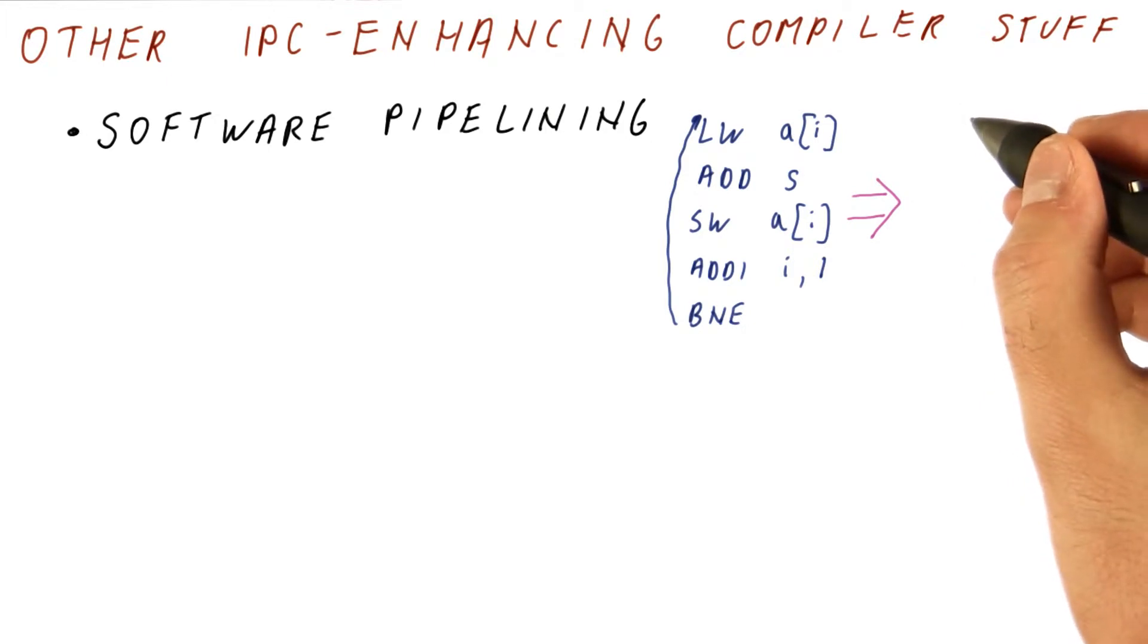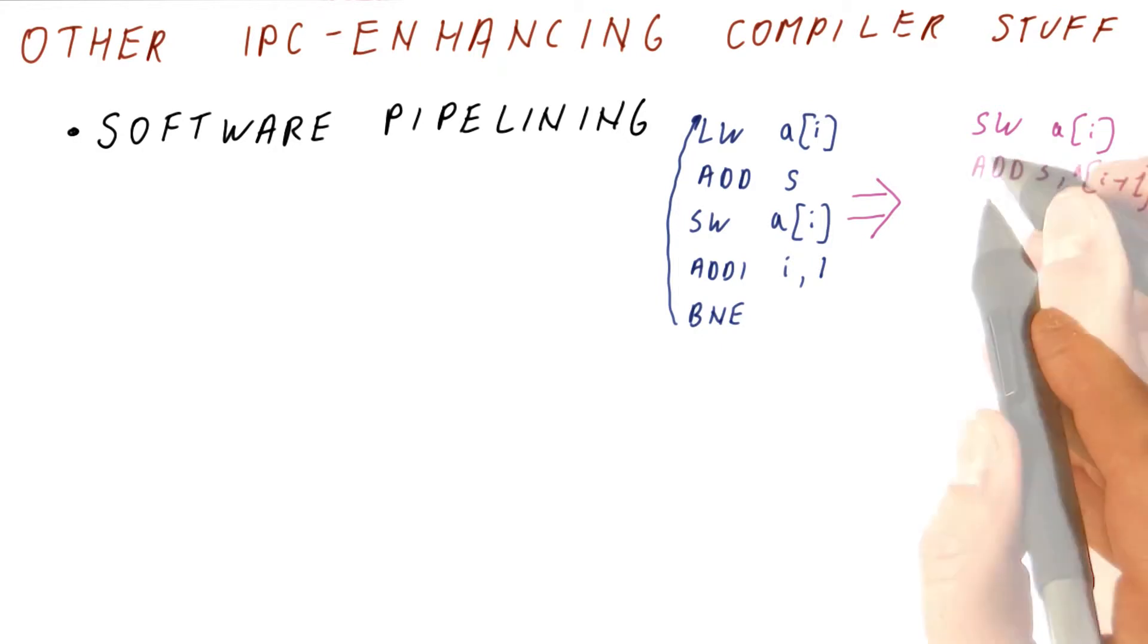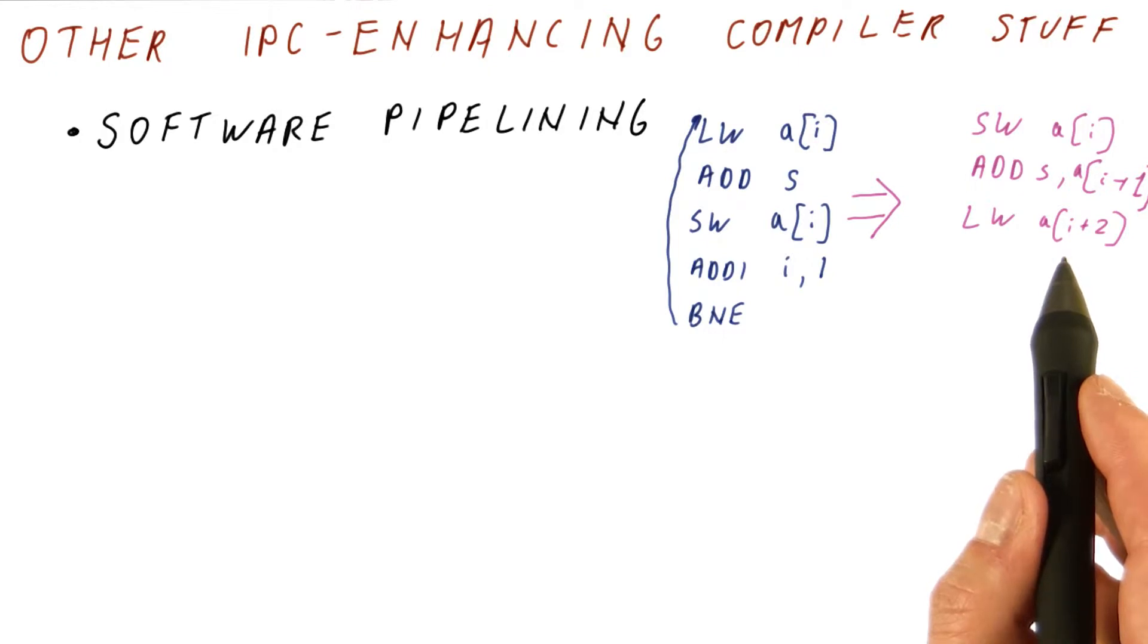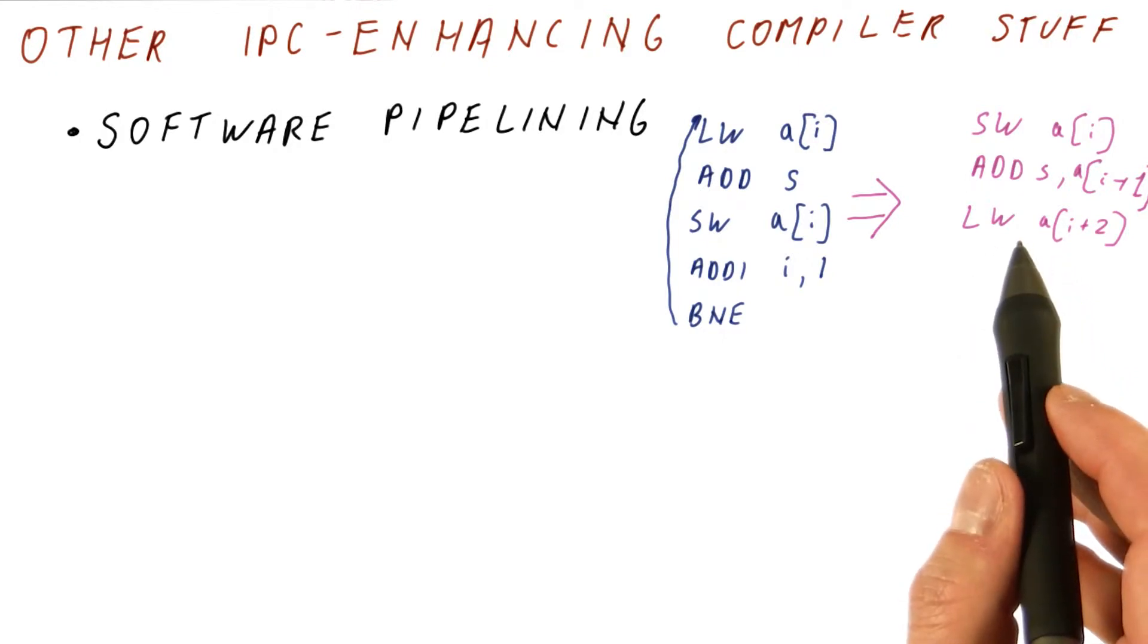And then schedule the code so that we do the last stage of a third iteration while doing the second stage of the next iteration and the first stage of the next next iteration. Why do this this way?